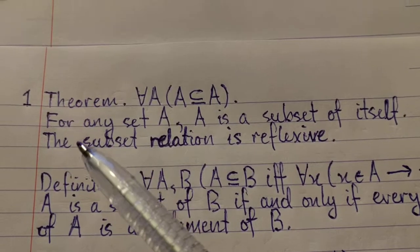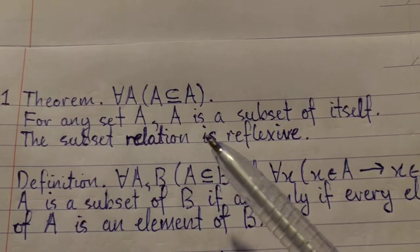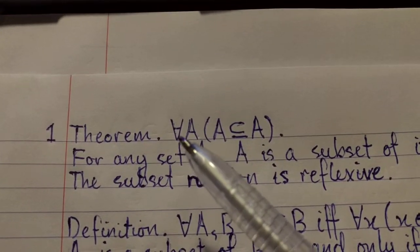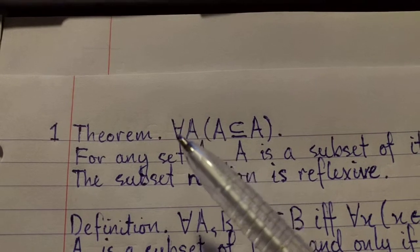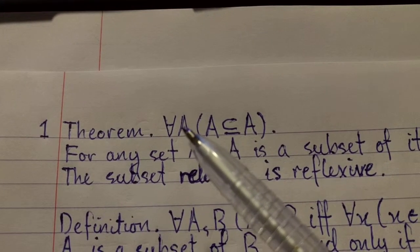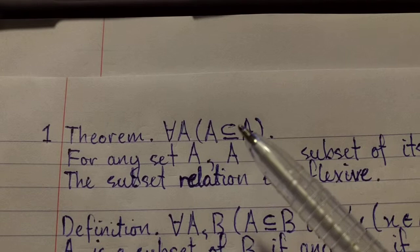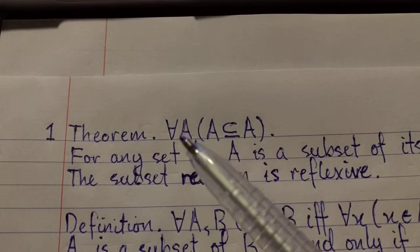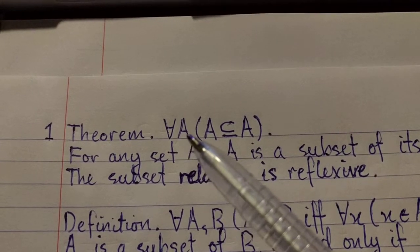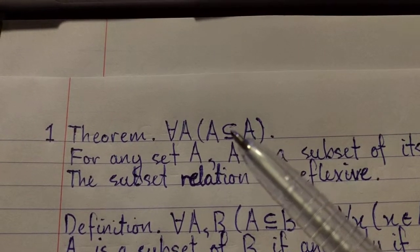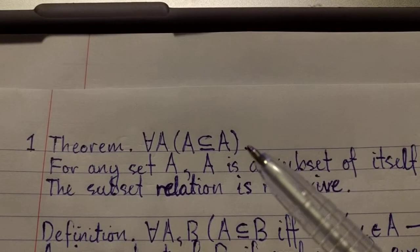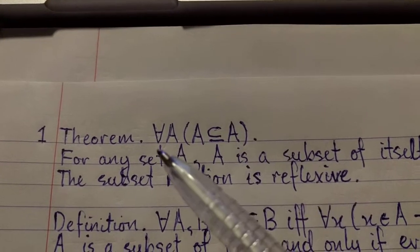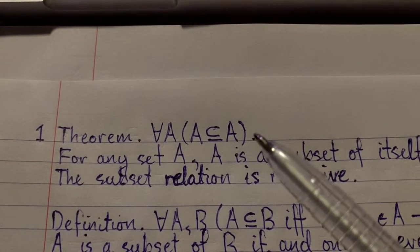This can also be understood to mean the subset relation is reflexive. So in symbols, we have the universal quantifier, for all, and the subset relation, or inclusion relation. So we read the symbols, for all A, A is a subset of A. And note that I've put a full stop after the formula. The formulas are sentences, so they need to have full stops.